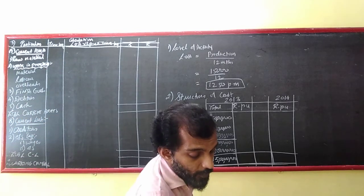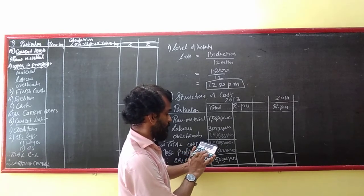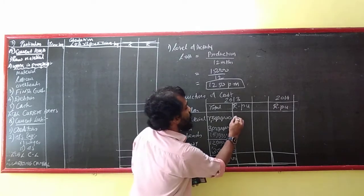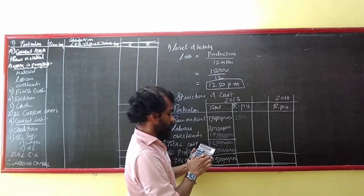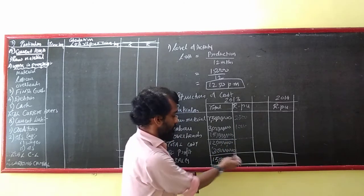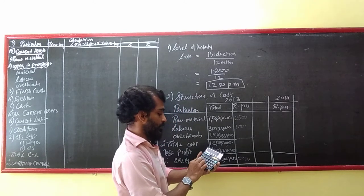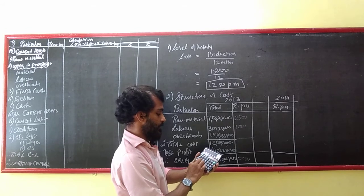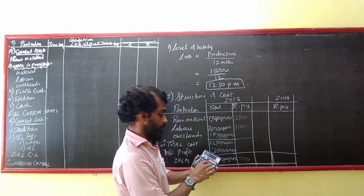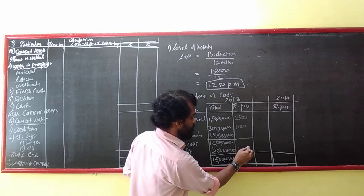Let me find the rate per unit for these things. Material: 7,50,00,000 divided by 30,000 = 2,500. Labor: divided by 30,000 = 1,000. Sales: 15 crore divided by 30,000 = 5,000. Profit: 3 crore divided by 30,000 = 1,000.